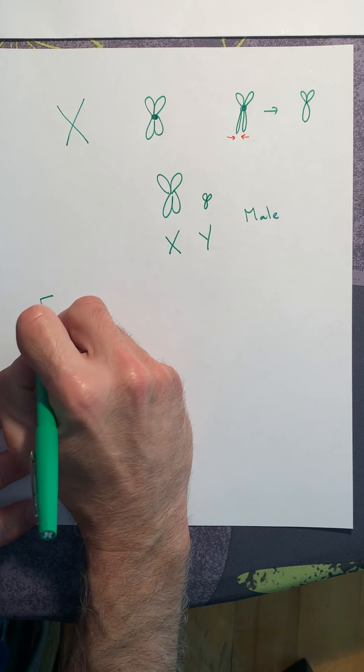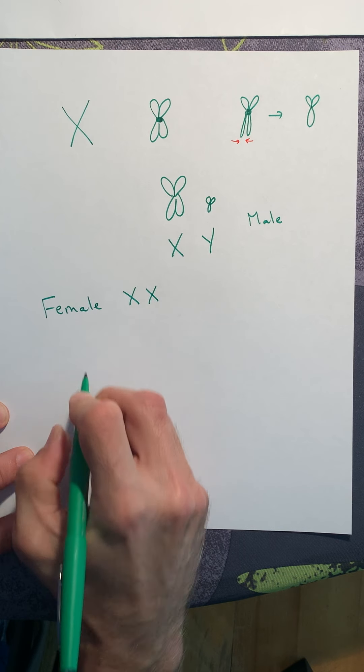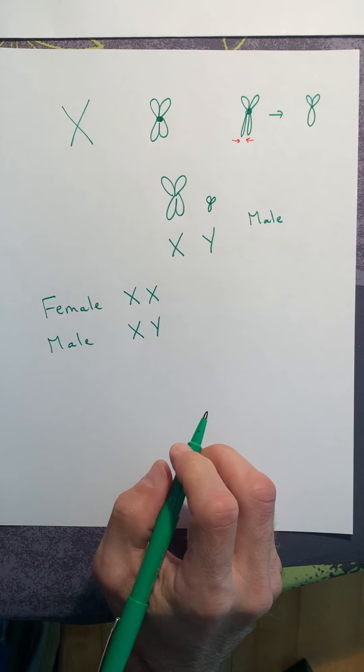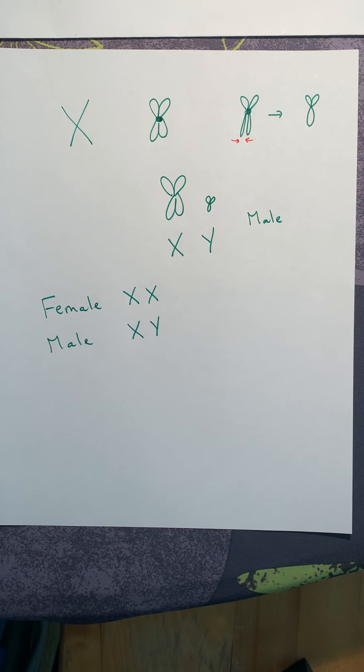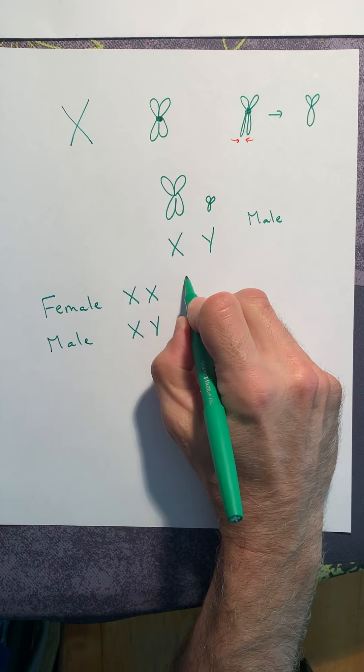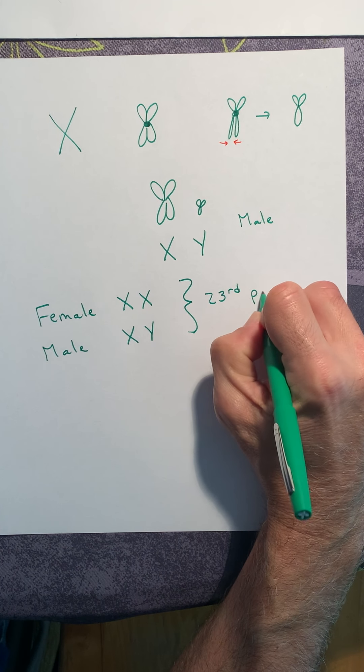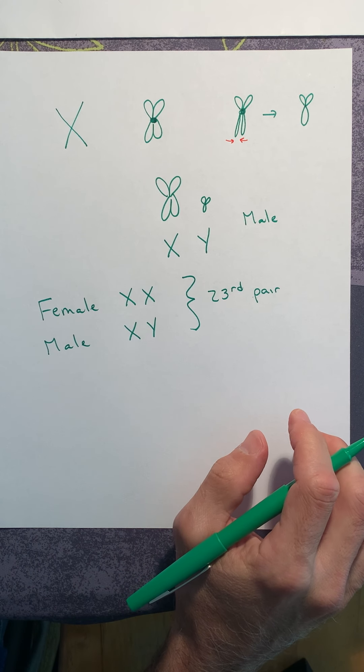So again, females have two large X chromosomes. And then we define males as XY and that Y chromosome is a small chromosome. So that's the 23rd pair of our homologous chromosomes that establish our sex, male versus female. So what does this have to do with genetics?